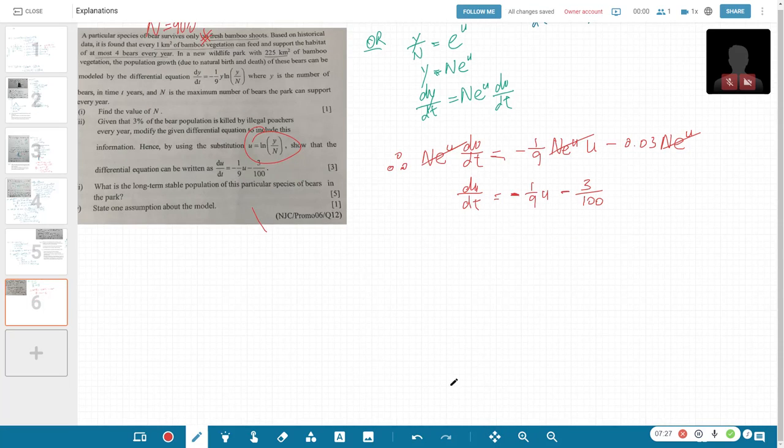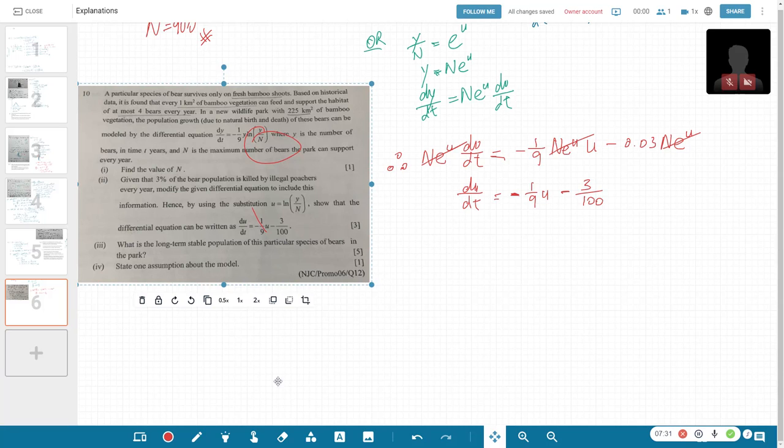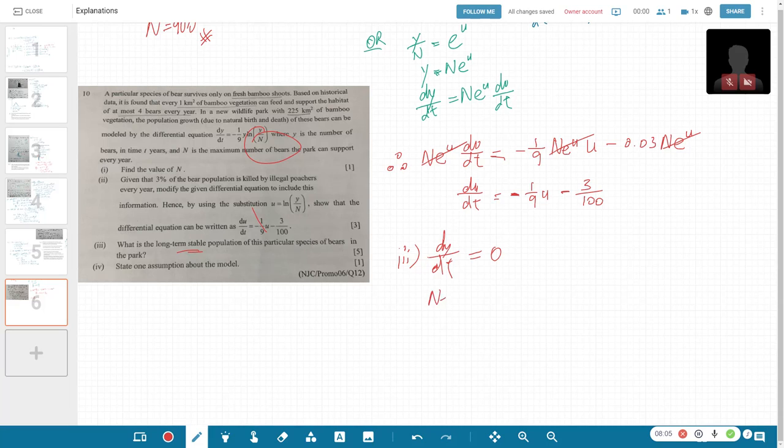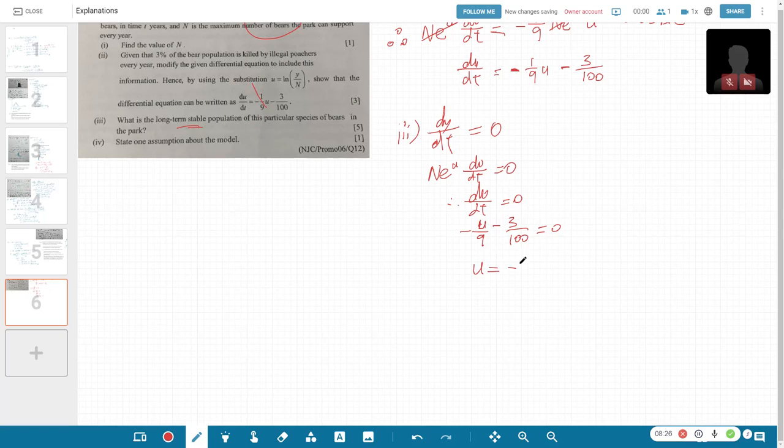Now Part 3: what is the long-term stable population of this particular species of bear? For Part 3, I'm not sure why is it 5 marks, but you can actually do it pretty simply. When it's long-term stable, it means that dy/dt must be equals to 0. So dy/dt equals 0. That's the stable part, because there will not be any change, it will stay stable at here. Which means that dy/dt being 0 also means that Ne^U du/dt equals 0, and we know that N and e^U cannot be 0, so therefore du/dt is equals to 0. This means that -1/9 U, or -U/9, minus 3/100 equals to 0, or U equals to -27/100.